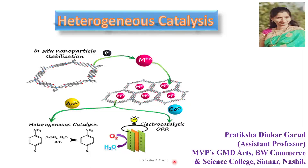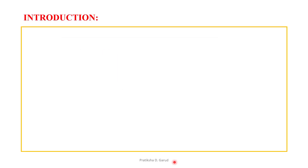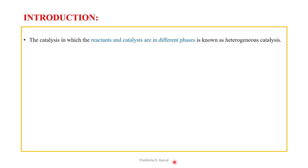Welcome back. In this video we are going to study another type of catalysis — heterogeneous catalysis. In earlier videos we saw homogeneous catalysis, where the reactant and catalyst are in the same phase. Here, 'hetero' means different, so when the reactant and catalyst are in different phases, it is called heterogeneous catalysis.